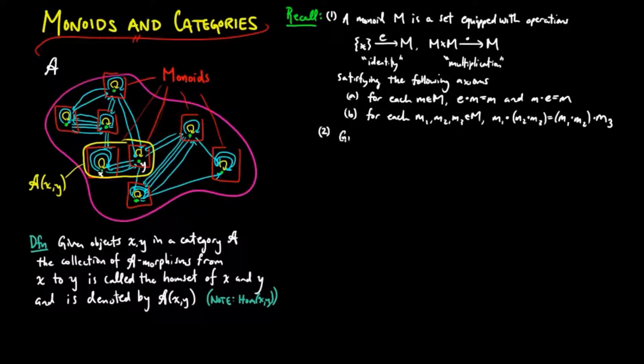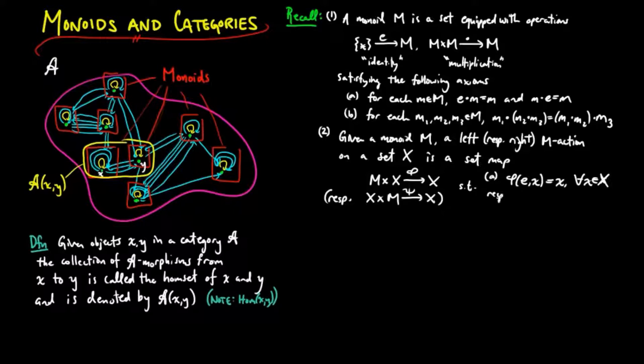And two, given a monoid M, a left, respectively right, M action on a set X is a set map phi from M times X to X, respectively psi from X times M to X, such that A, phi of E, X is equal to X, respectively psi of X, E is equal to X for each element X in X.